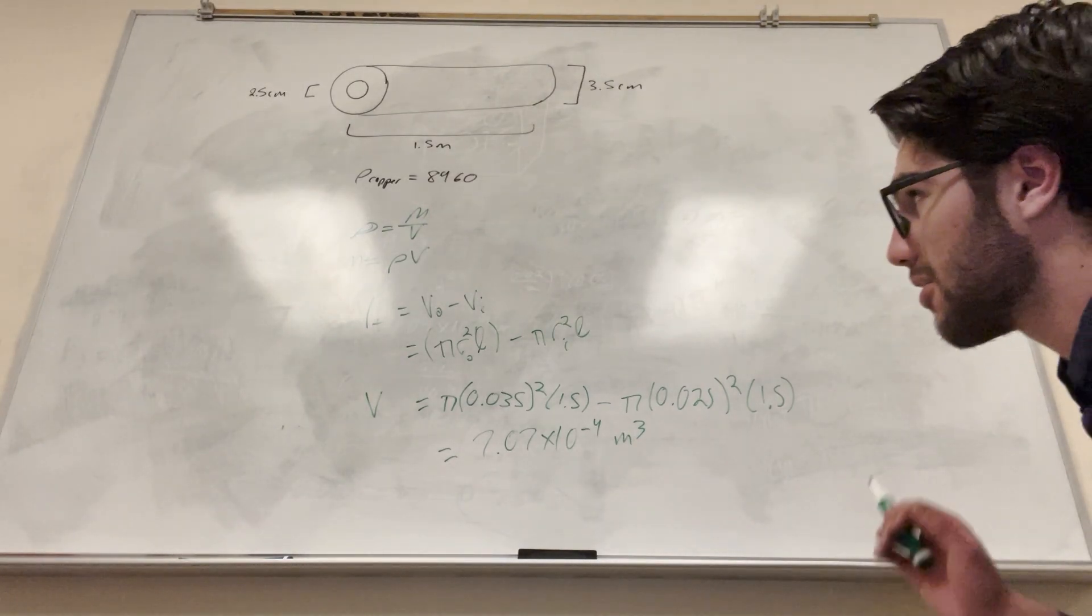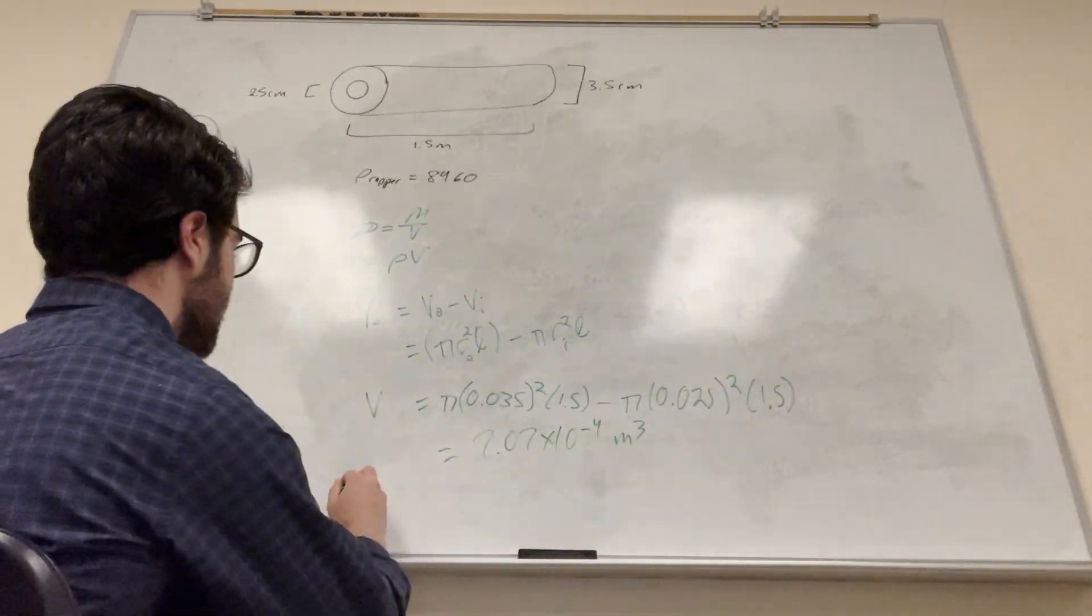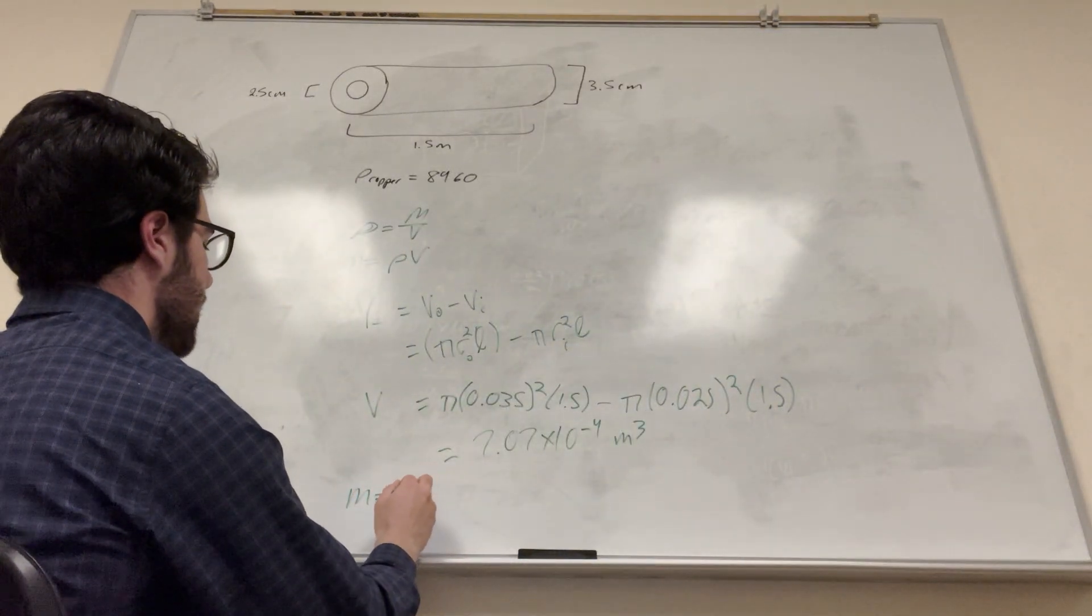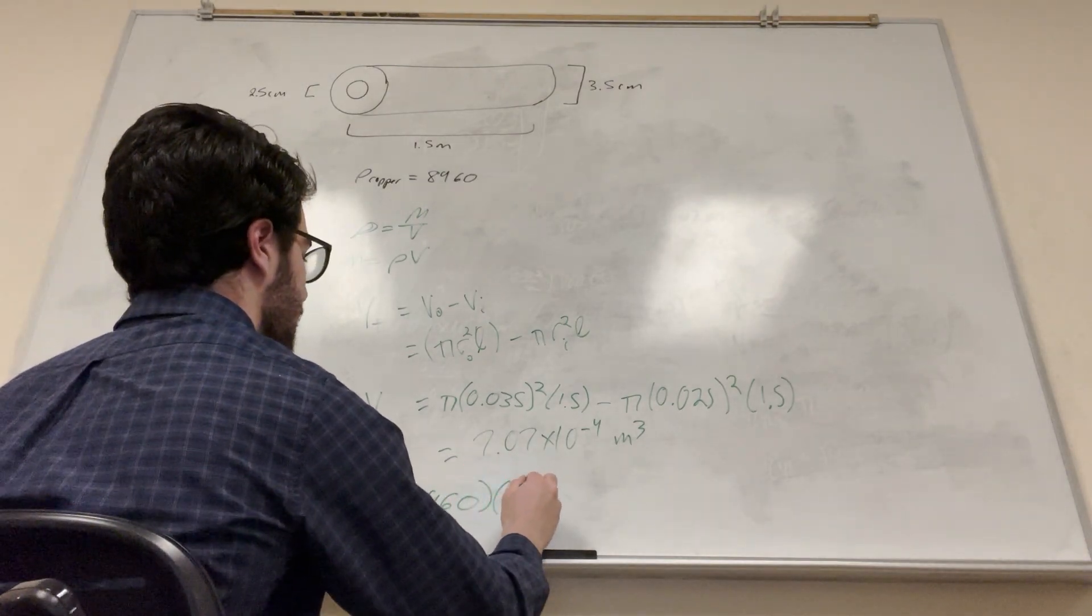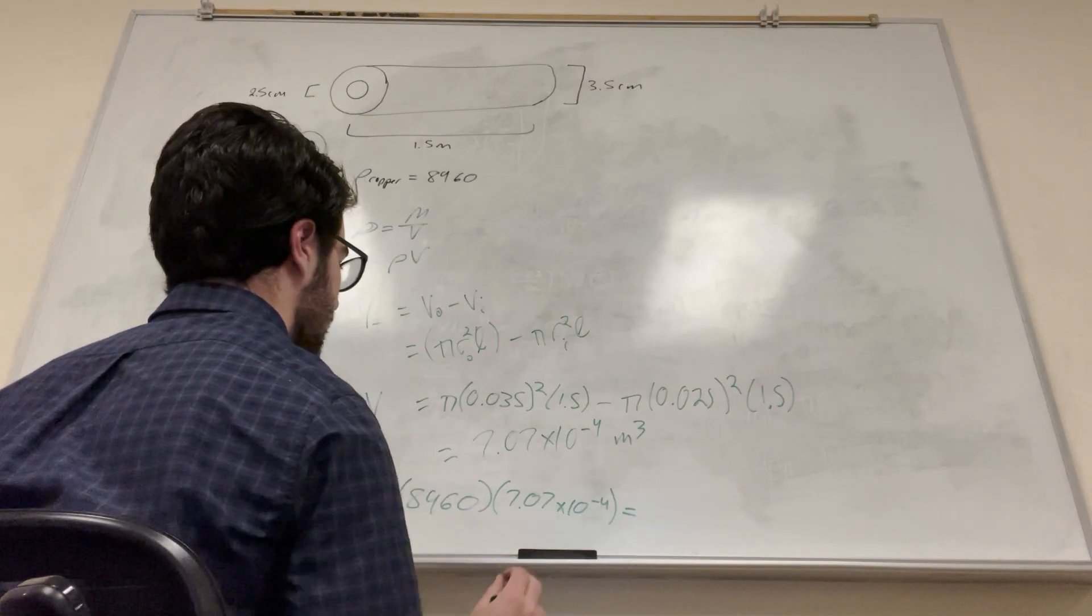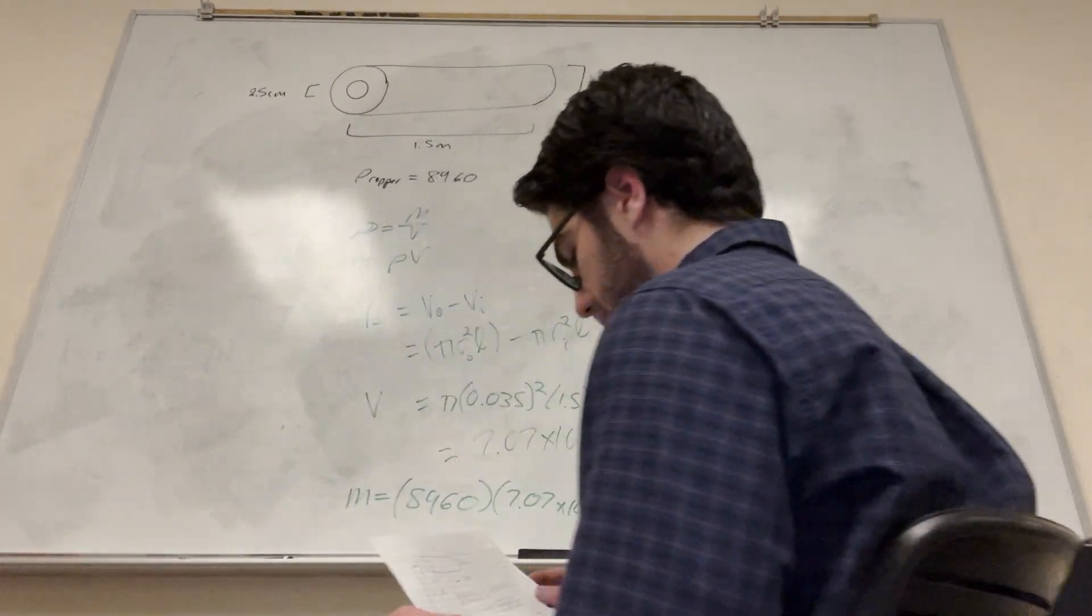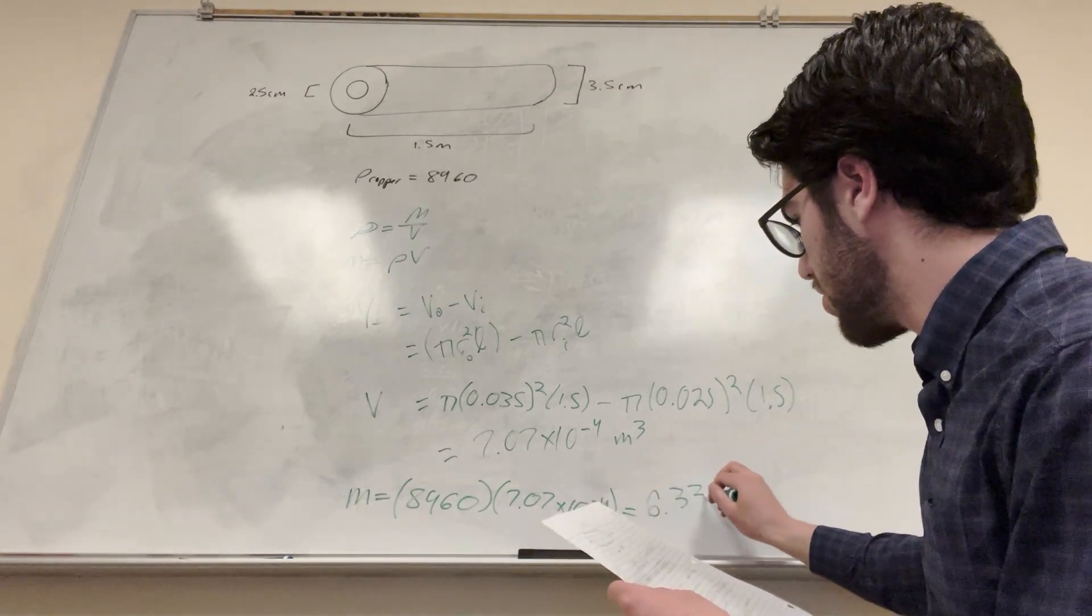What we can do now is we can just plug it into our equation, right? Mass is equal to the density times volume. So mass is equal to the density 8960 times the volume 7.07 times 10 to the negative 4. We're going to get that that number is equal to 6.33 kilograms.